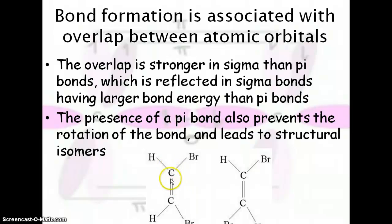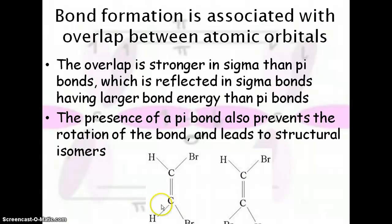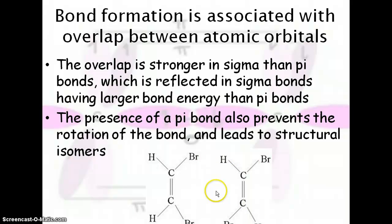Here's a good example of structural isomers with hydrogen and bromine. You have hydrogen and bromine on one carbon, and on the other side it's flipped — bromine and then hydrogen. They are structural isomers because the pi bond in the double bond is preventing the carbons from rotating. So you get one where two hydrogens are on the same side and bromines on the same side, and another where the bromines are across from one another and the hydrogens are across from one another.